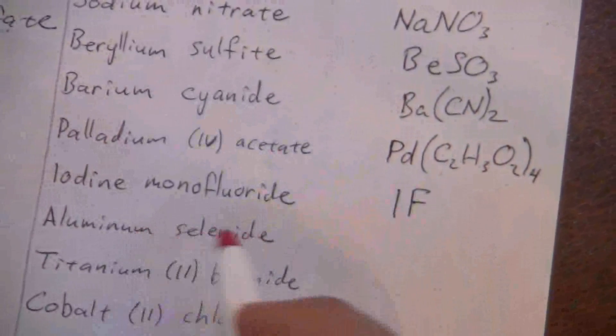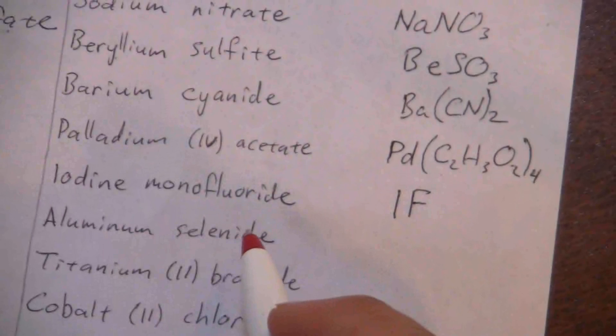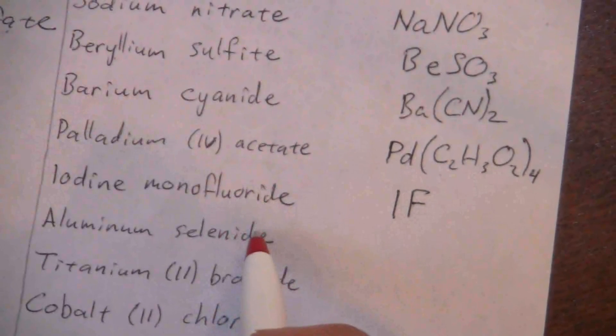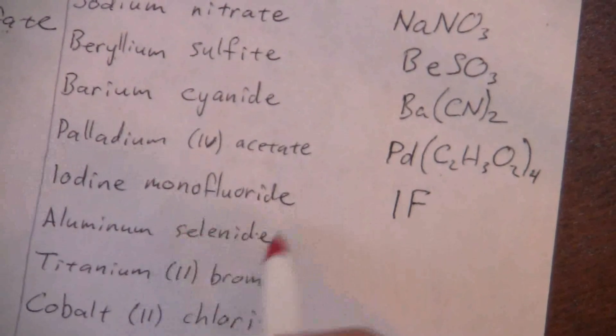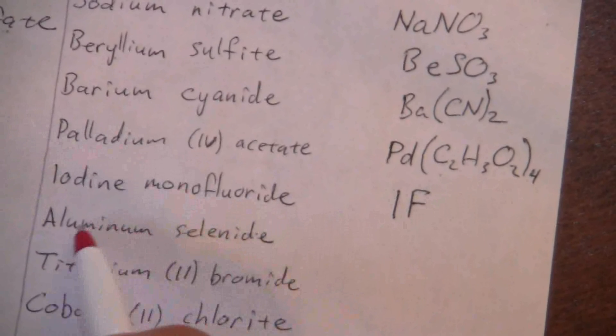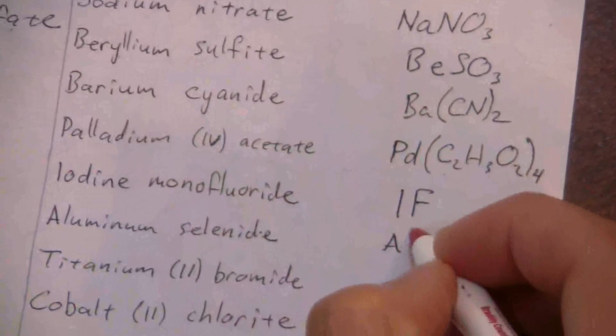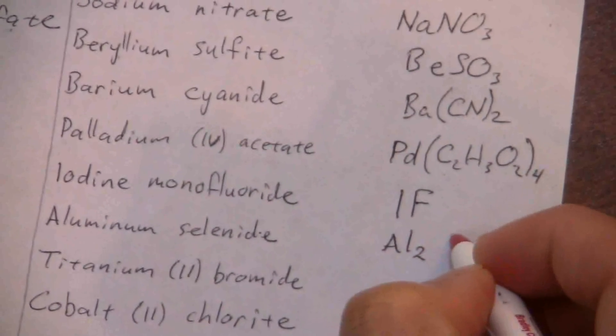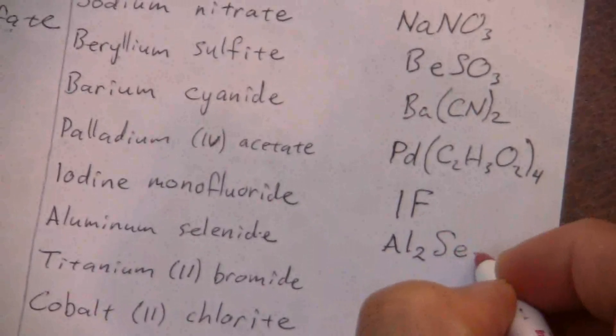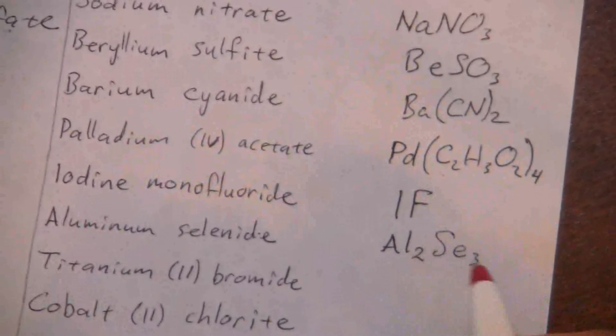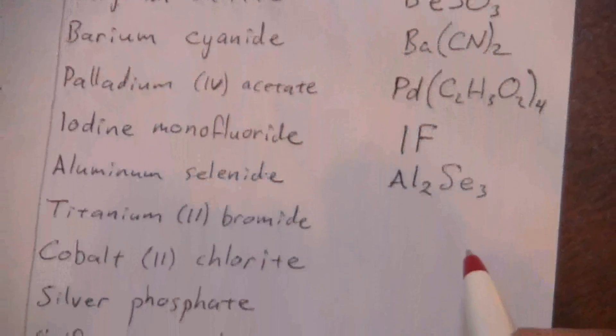We need to balance out the charge. The negative two, I need three of those to give me negative six, and two of the positive threes to give me positive six. I end up with Al2Se3, aluminum selenide.